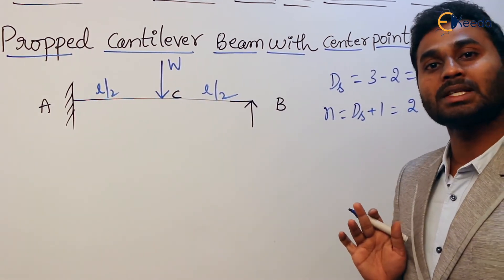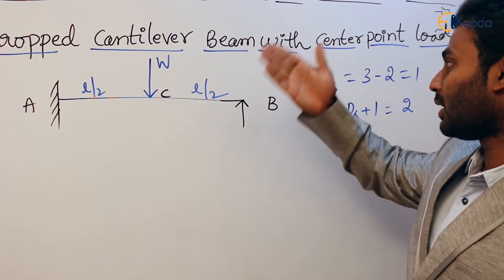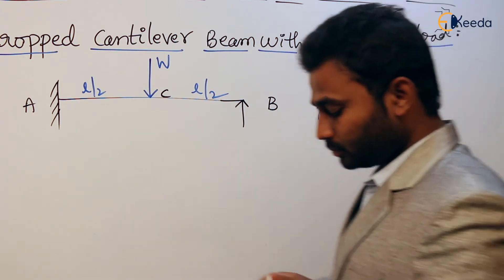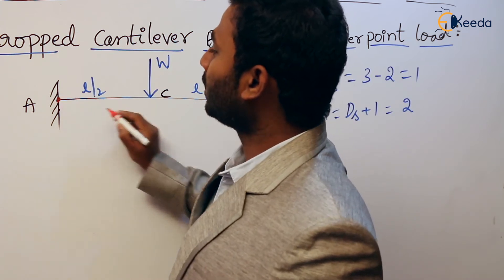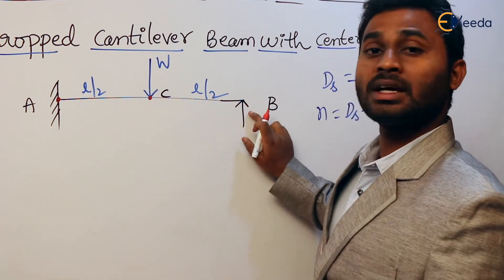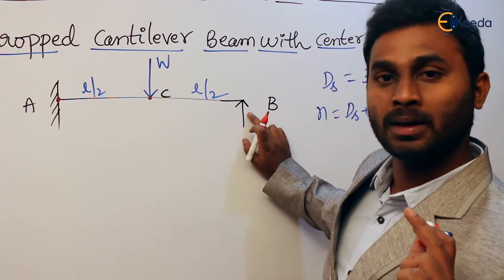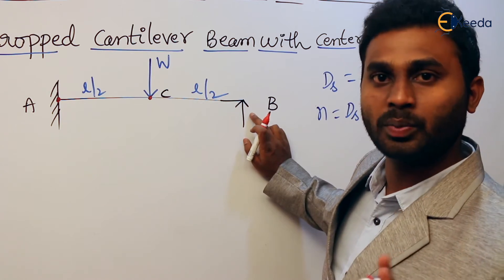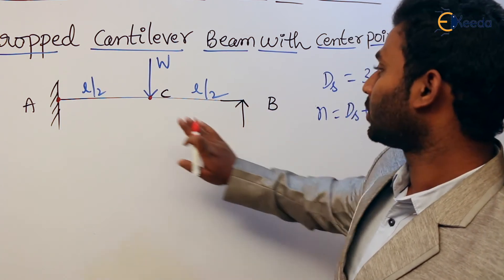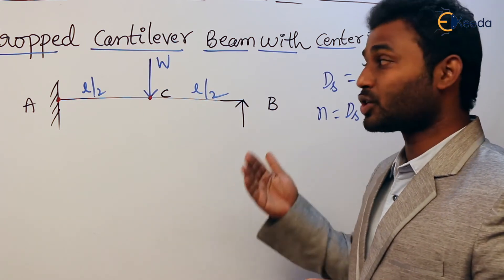After calculating the number of plastic hinges required, we locate where those plastic hinges are forming. The possible locations for plastic hinge formation are at the fixed support and under the point load in the span. Note that at B, which is a hinged support, it is already a hinge, so a plastic hinge will not form there — forming one at a pin or roller support makes no sense.